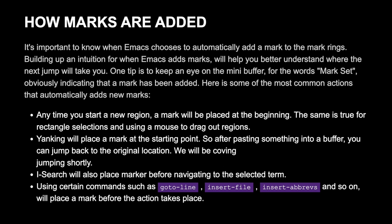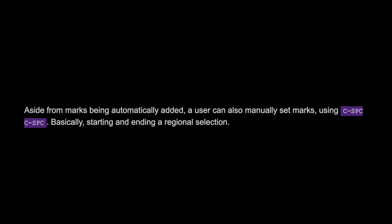iSearch will also place a Mark before navigating to the selected term. Using certain commands such as go-to-line, insert-file, or insert-abbrevs, and so on, will place a Mark before the action takes place. Aside from Marks being automatically added, a user can also manually set Marks using ctrl+space ctrl+space, basically starting and ending a regional selection.